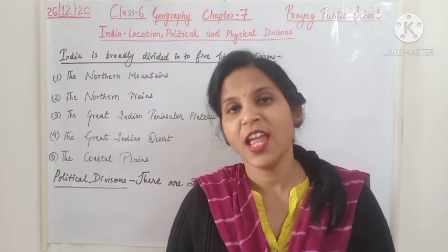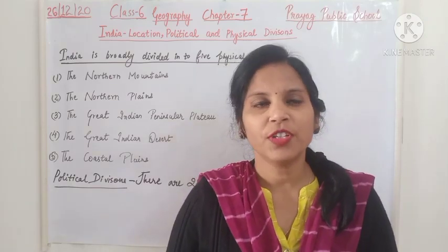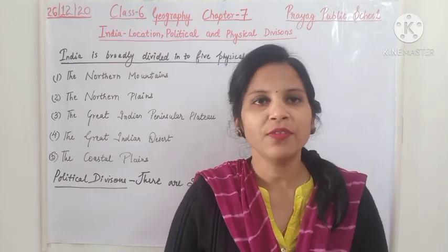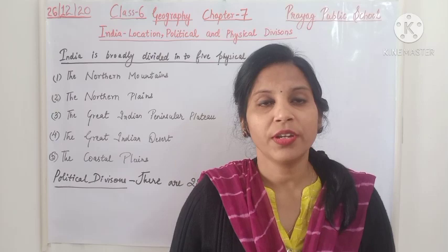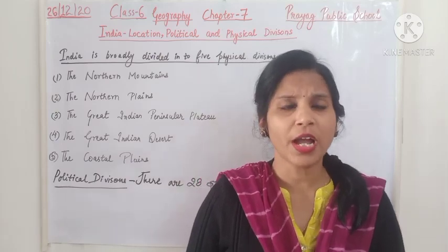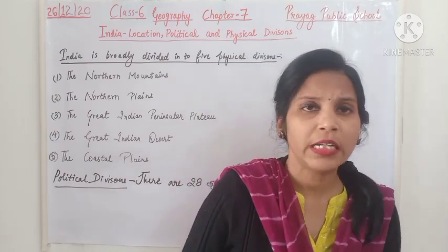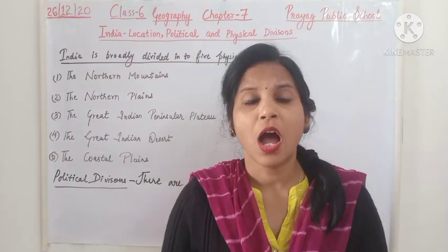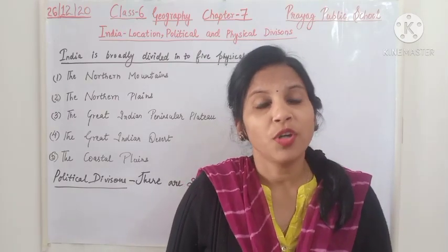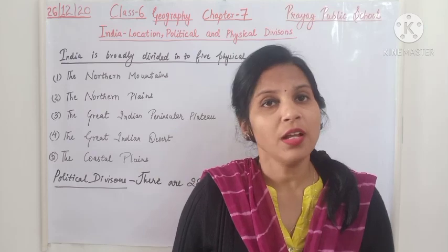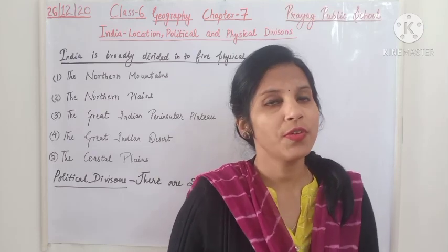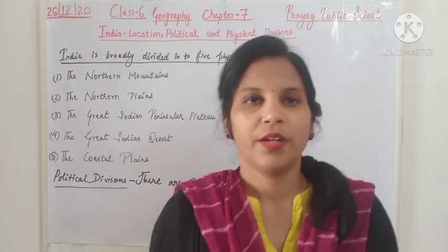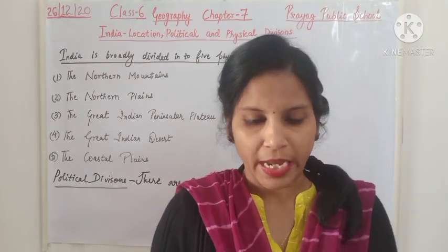Today we will proceed to our next pen paper chapter, that is chapter number seven of geography. The name of the chapter is 'India: Location, Political and Physical Divisions.' In this chapter we will study what is the location of India, and how many physical and political divisions of India there are.